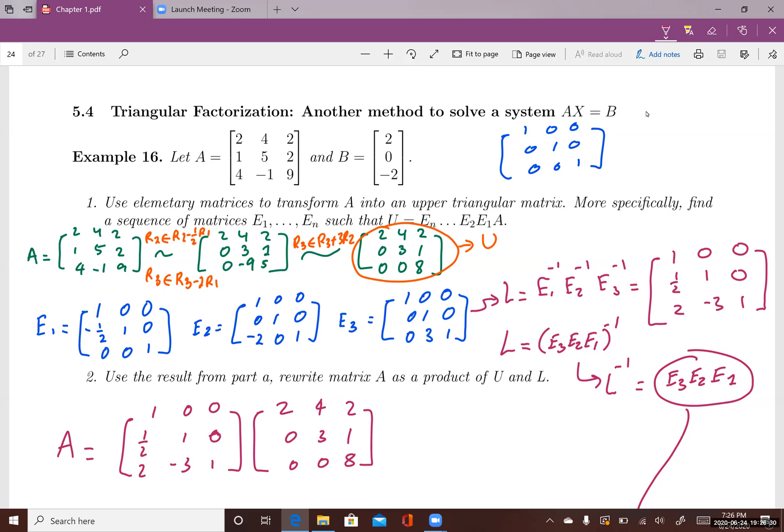Let's look at the matrix A and the constant vector B. The goal is we want to solve for X, where AX equals B. A is a coefficient matrix and B is a constant vector.